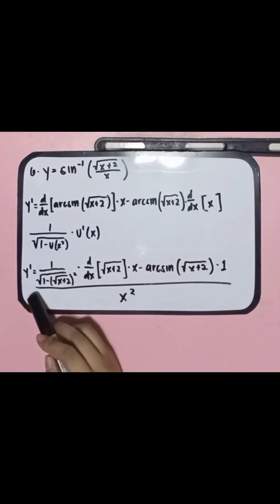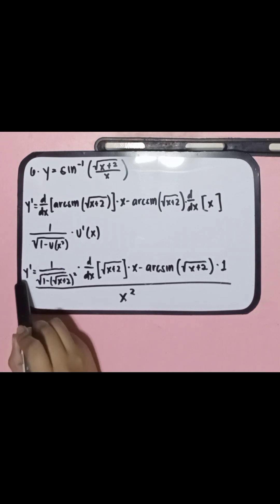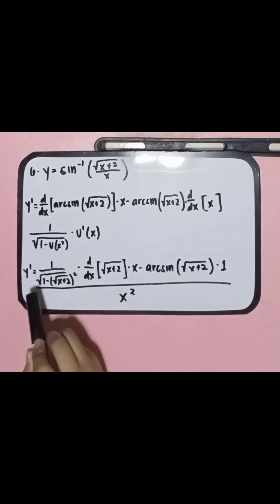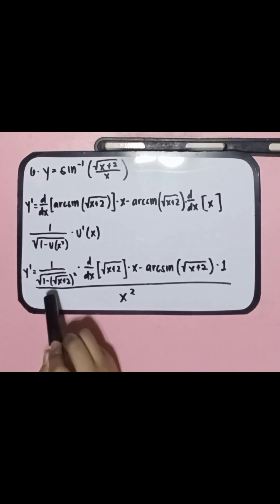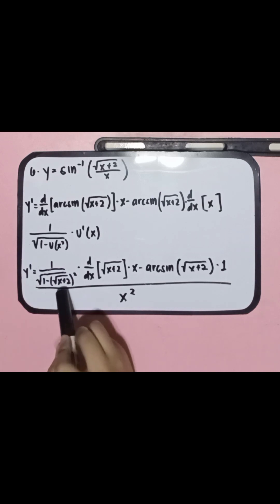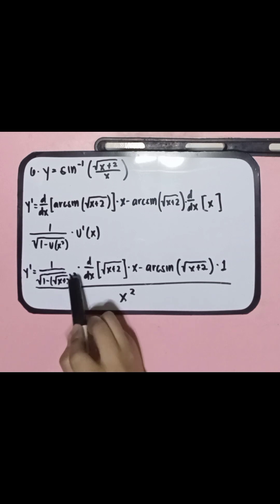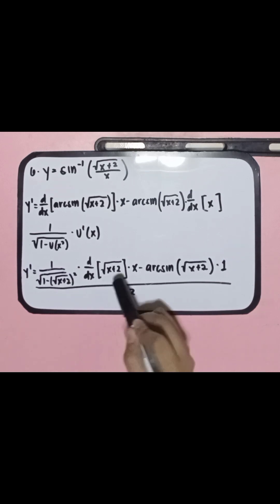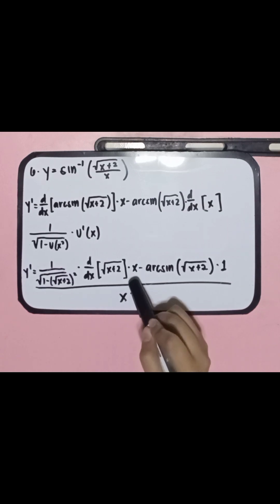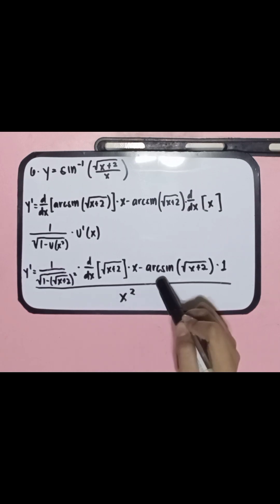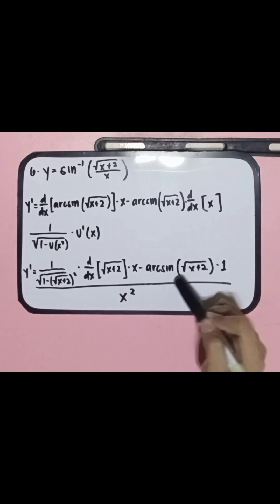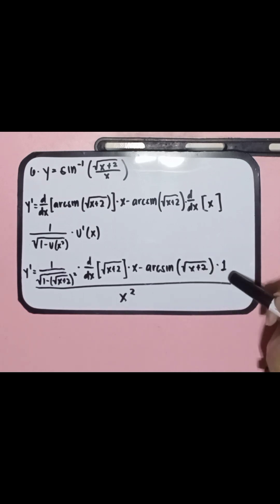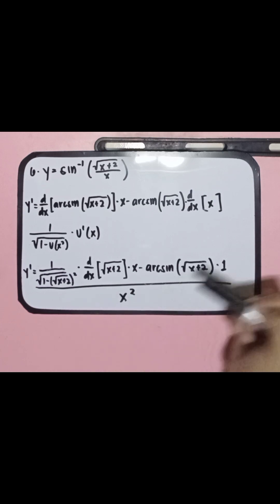This gives us y prime equal to 1 over the square root of (x plus 2) over x — which is our u — times the square root of (x plus 2) over x, minus arcsin times the square root of (x plus 2), multiplied by 1 over x squared.